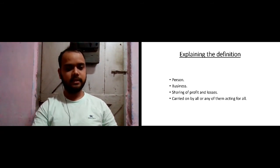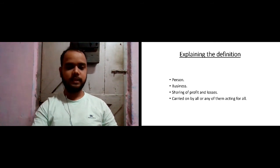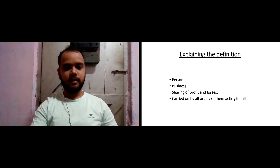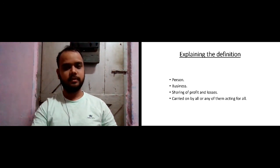If there is no sharing of profit and loss, there will be no partnership — this is a core element. The last point is the agency form, where a partner acts as a principal and also as an agent, which is stated as 'carried on by all or any of them acting for all.' That's all for today. Stay tuned for my coming lectures on the Indian Partnership Act 1932. Stay safe, thank you.